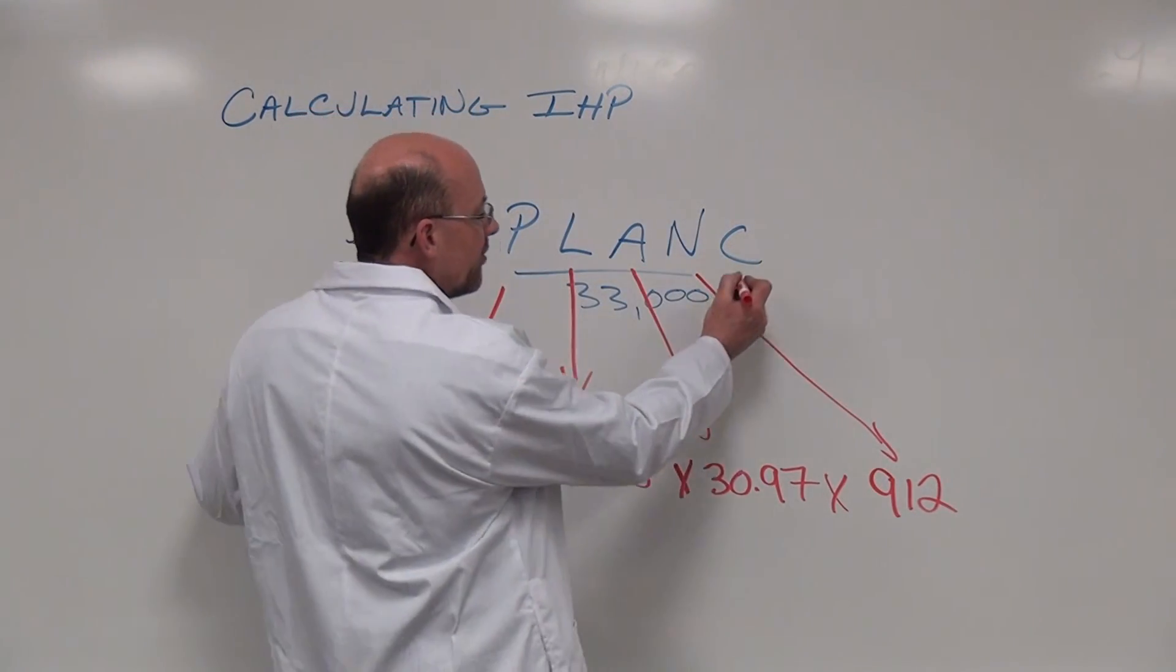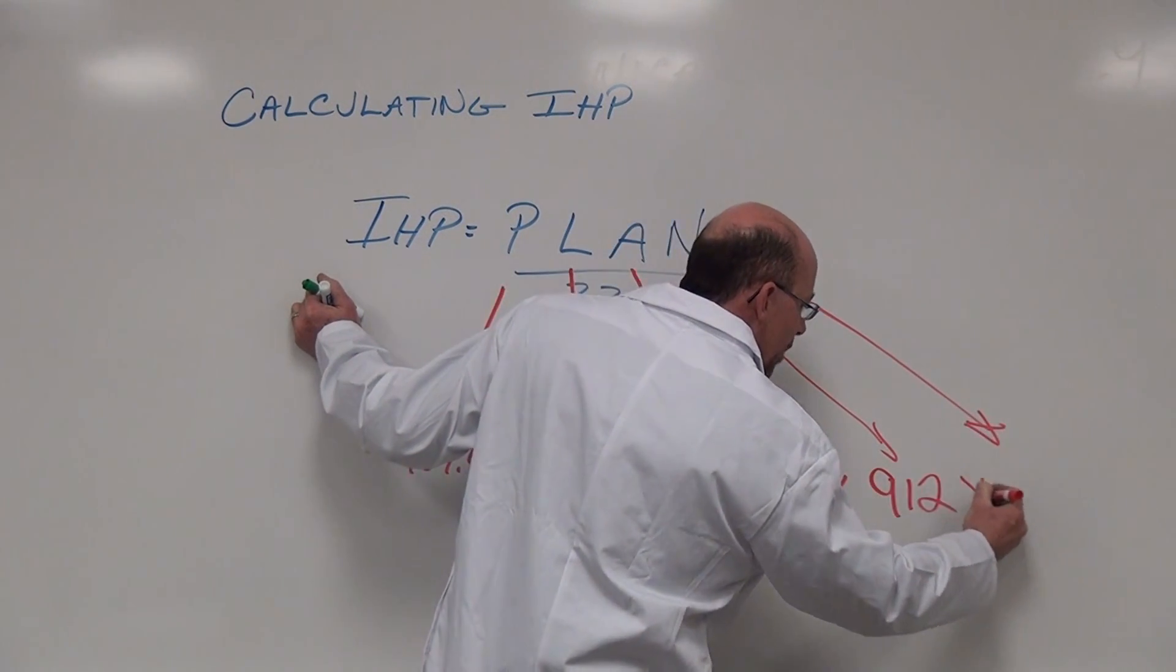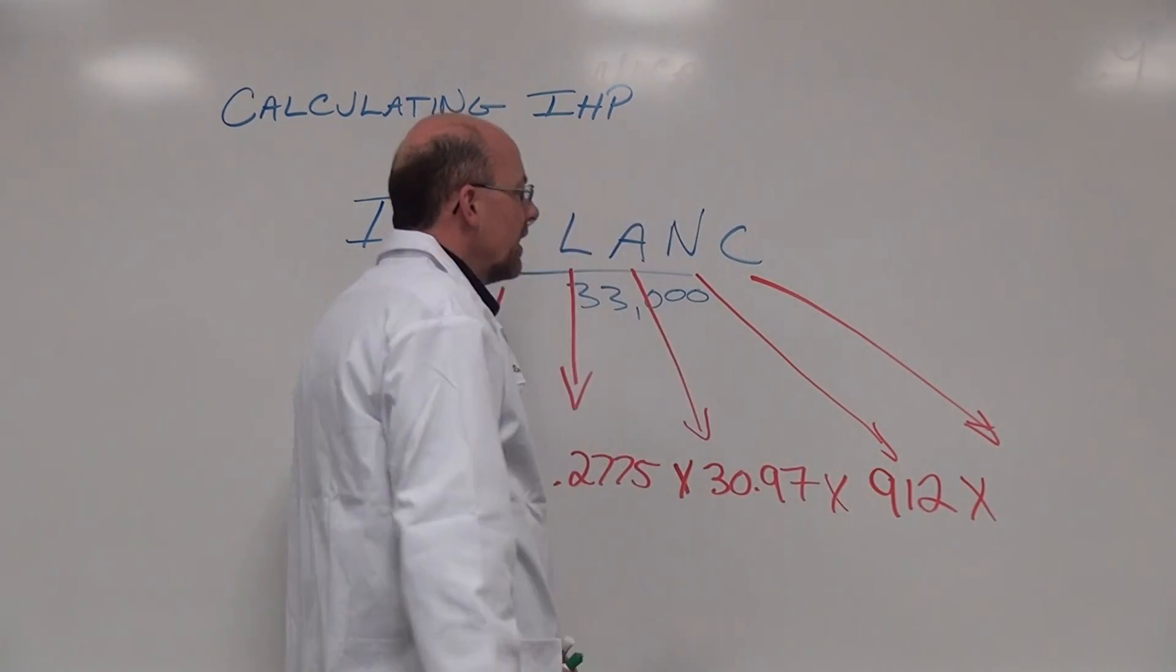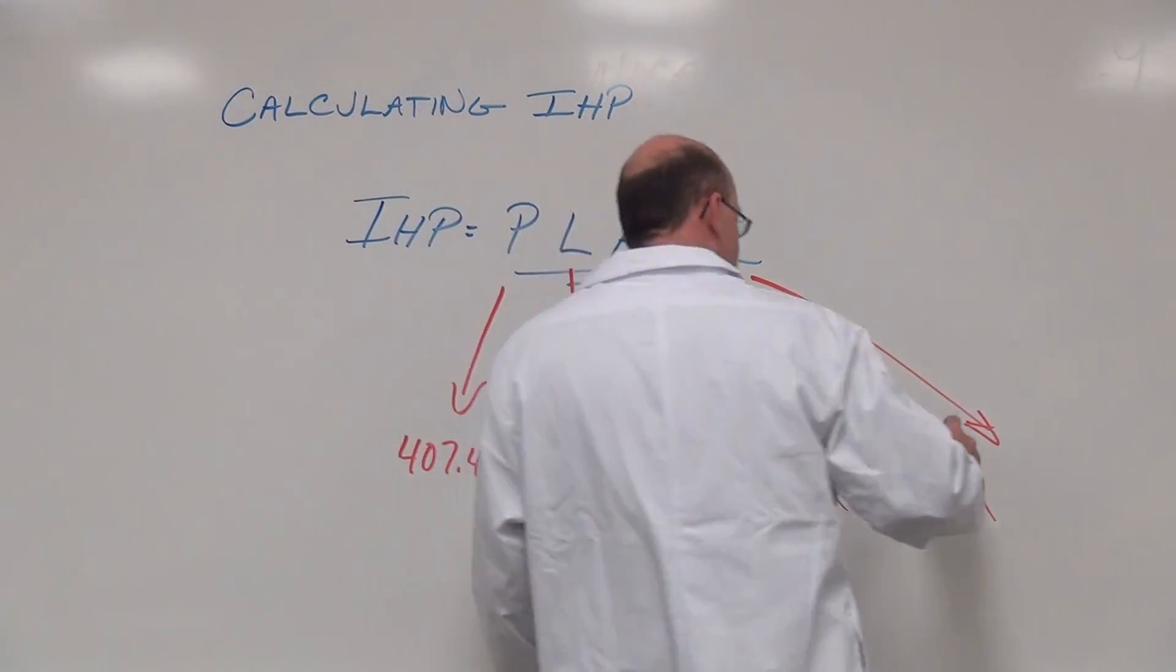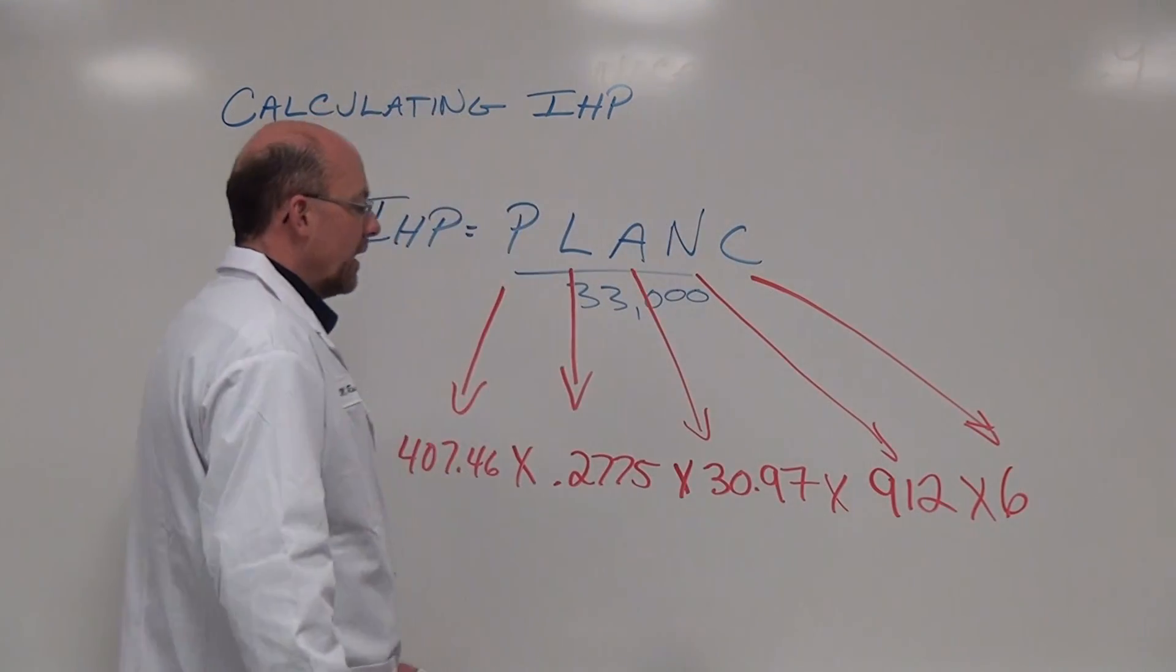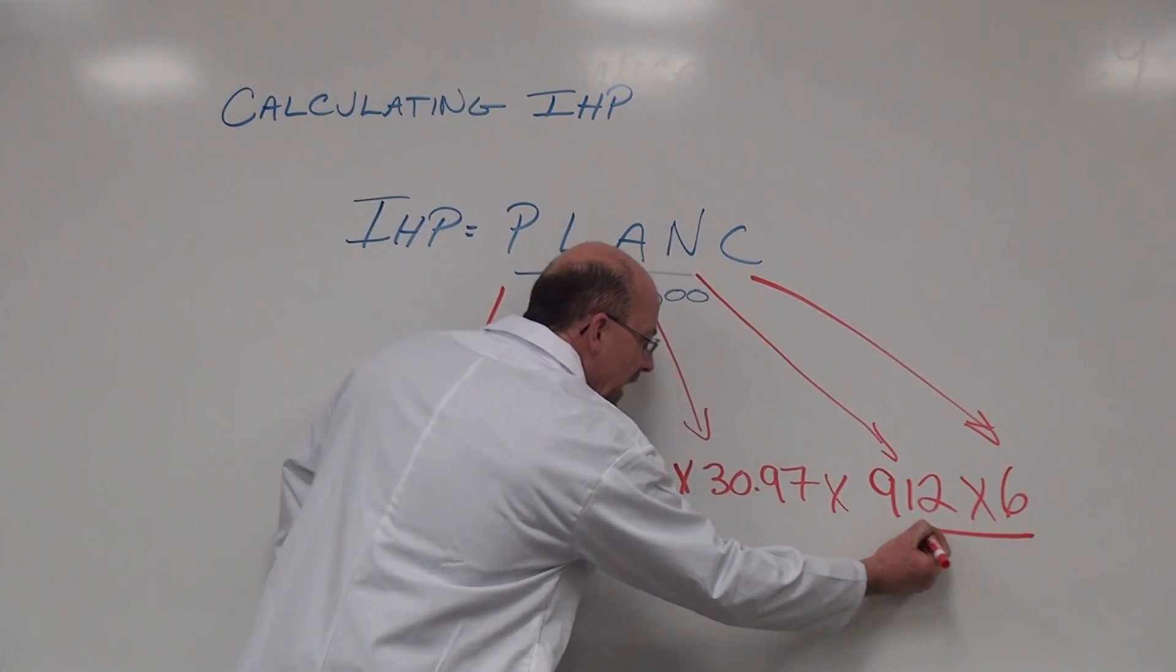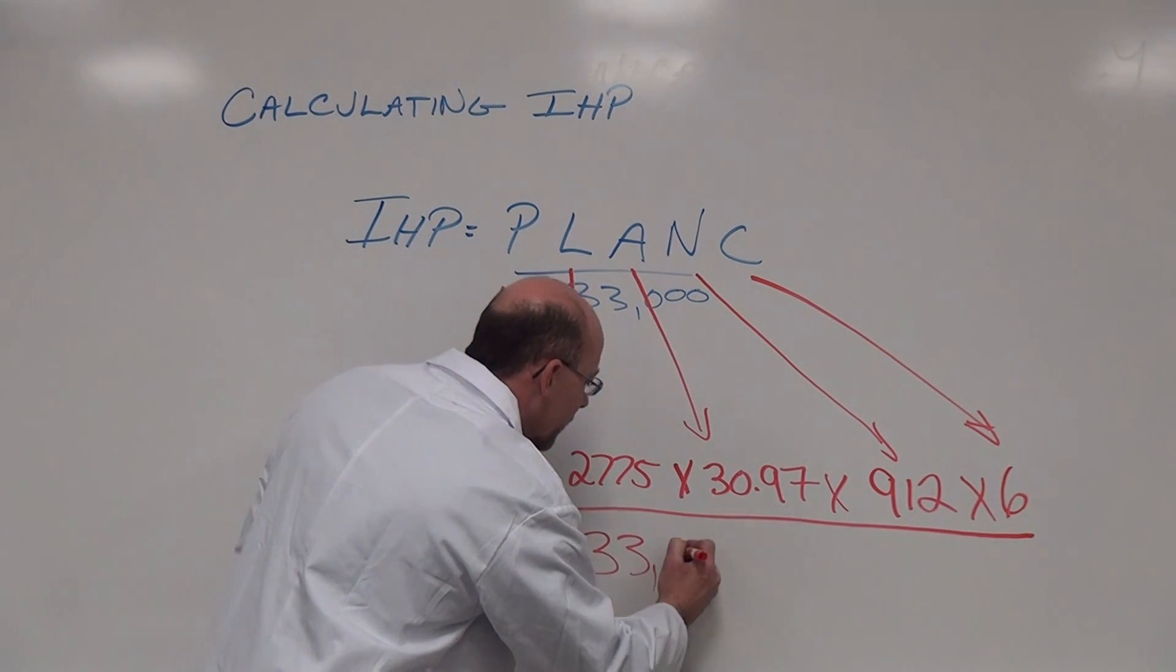The next one we're looking at is C, which is another factor multiplied times the number of cylinders in application, and that particular number is 6 cylinders. And again we're going to divide this after we multiply it all together by 33,000.